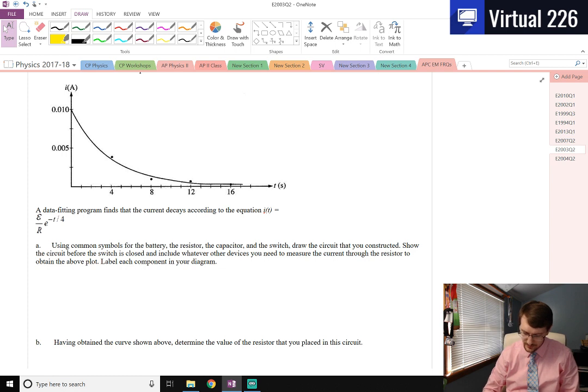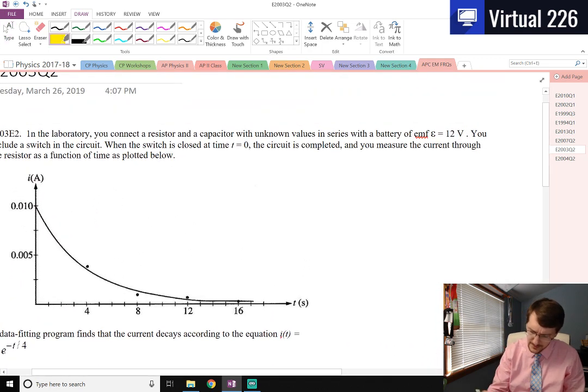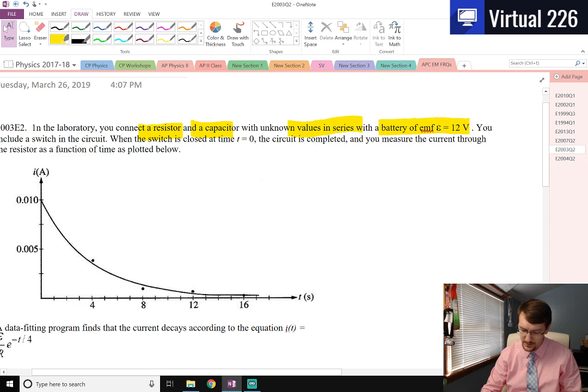Using common symbols for the battery, the resistor, and the capacitor, and the switch, draw the circuit that you constructed. Show the circuit before the switch is closed and include whatever other devices you need to measure the current through the resistor to obtain the above plot. Label each component in your diagram. So that's a lot of stuff they're asking there, but if we kind of read from up in the beginning and then carry that down here, we're in series with these things. It's a resistor, a cap, and a battery, and then we just need to measure a current.